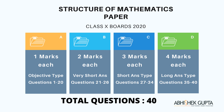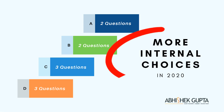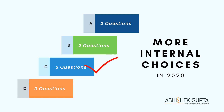Section A will be objective type questions of one mark each. Section B will be very short answer type questions of two marks each. Section C will be short answer type questions of three marks each. Section D will be long answer type questions of four marks each. The great part for 2020 is that there are more internal choices — two in section A, two in section B, three in section C, and three in section D — and I'm sure you'll be able to choose the best option to score well.